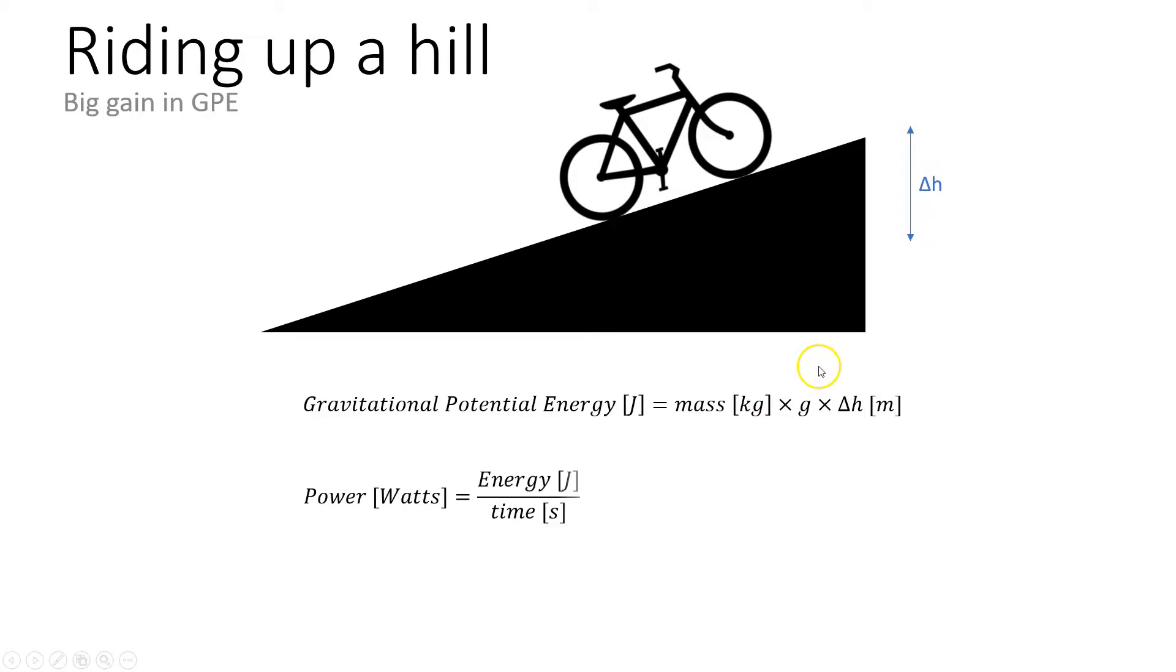So I will gain some gravitational potential energy and because power is energy over time Strava can calculate my power output just purely due to the gravitational potential energy gain. Now I've given Strava my mass details and the mass of my bike so it knows some of those details already.